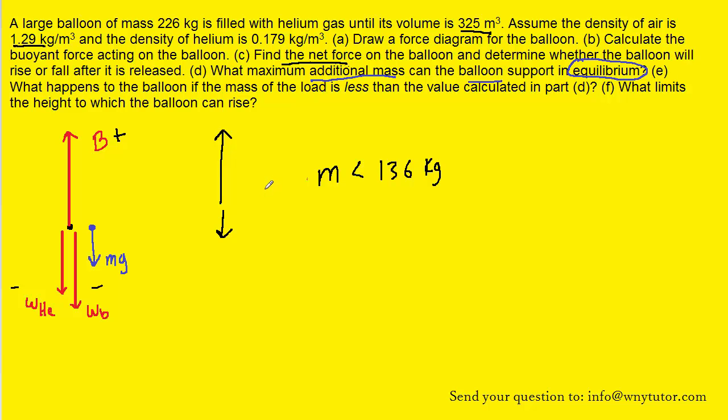But in Part F, it asks what limits the height to which the balloon can rise. It turns out it will not rise indefinitely. And the reason is that as the balloon rises, the density of the air is decreasing. And as the density of the air decreases, the buoyant force will also tend to decrease. So eventually as the balloon rises, the buoyant force will decrease to the extent that its magnitude, that is the magnitude of the buoyant force, will equal the magnitude of the downward acting forces.